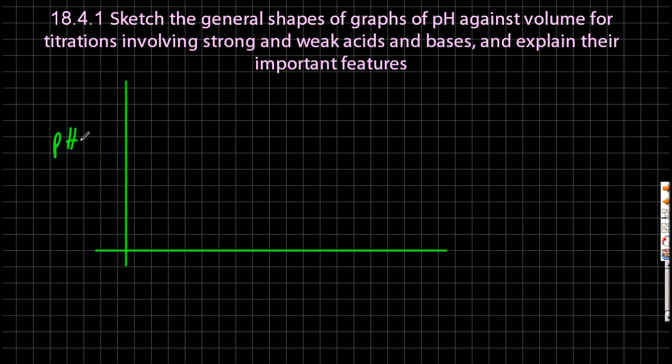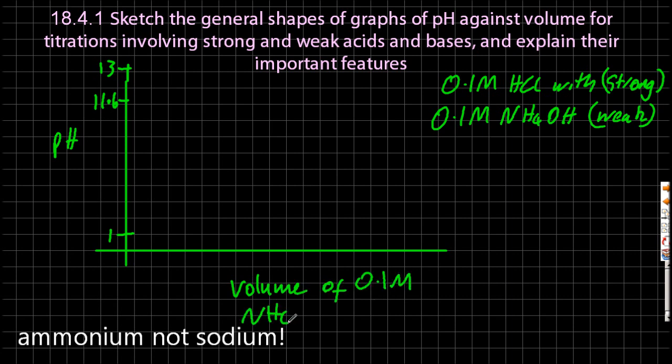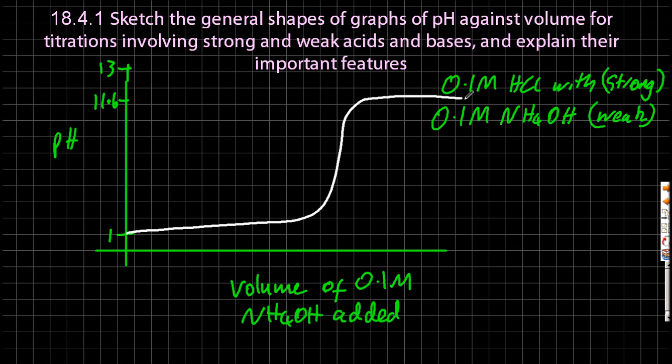Moving on to another graph. Let's try strong acid and a weak base now. So my strong acid, I'm going to start at 1. And if it's a weak base, I'm actually going to end at 11.6. Sodium hydroxide is partially dissociated. It's a weak base. I'm going to draw it in. Now notice there's no buffering this time. At no stage is there a weak acid or base and its salt present.